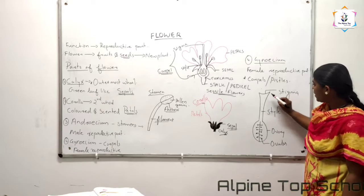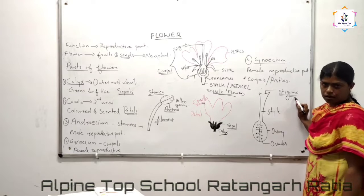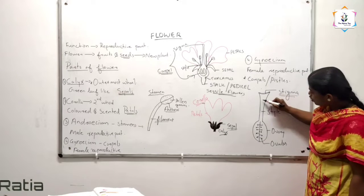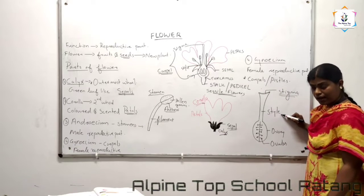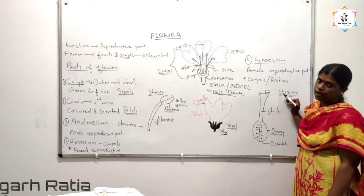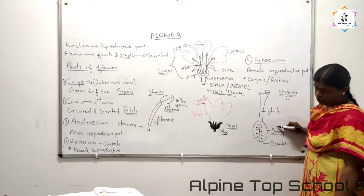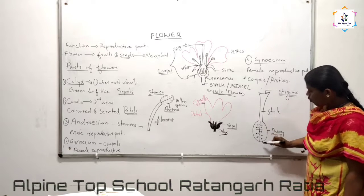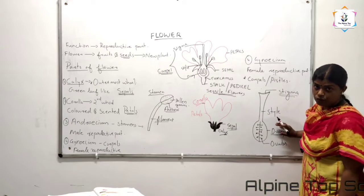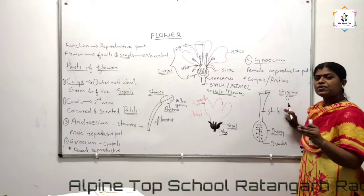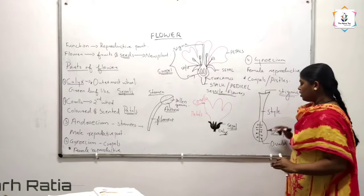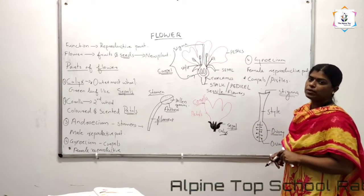A pistil has three major parts. The topmost portion of the pistil is known as stigma. The tube-like portion is known as style. And the bottle-like portion is known as ovary. So these are the three parts of a pistil: stigma, style, and ovary. Inside the ovary some dots are shown here — these are the ovules. From the ovules the eggs, or the female gametes, are forming. So from pollen grains the male gametes are forming, and here from the ovules the female gametes are forming.